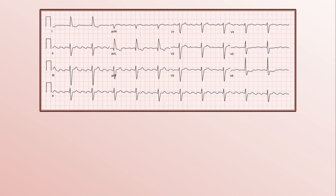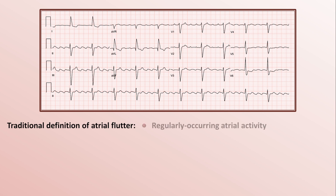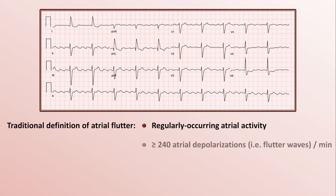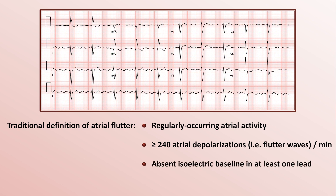Here's a representative example of atrial flutter. You've presumably seen this rhythm before with the characteristic sawtooth flutter waves, best seen in the inferior leads. Atrial flutter has been traditionally defined by four criteria: a rhythm with regular atrial activity occurring at least as frequently as 240 atrial depolarizations per minute — that is at least 240 flutter waves per minute — and with an absence of an isoelectric baseline in at least one EKG lead.